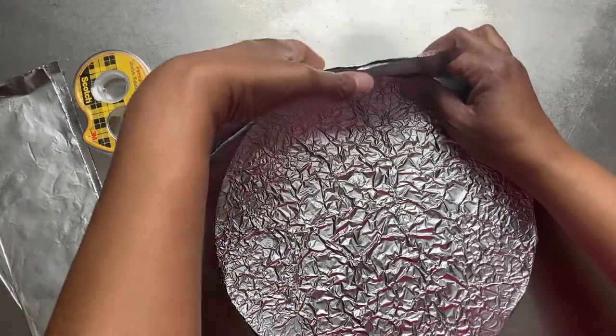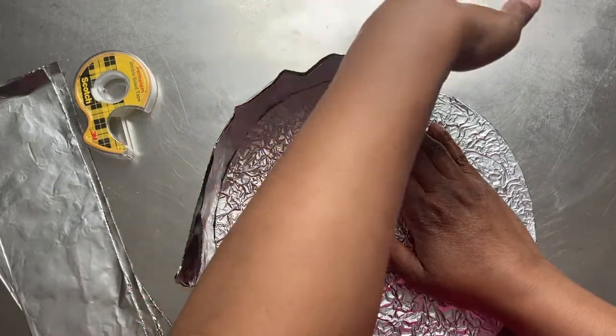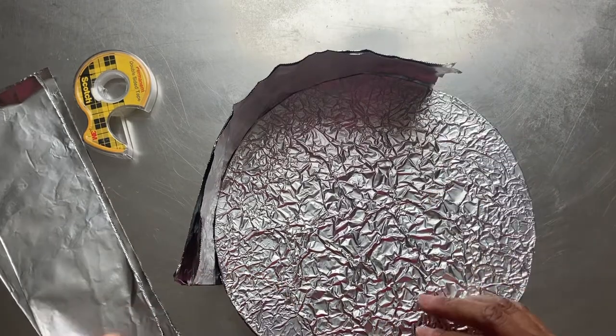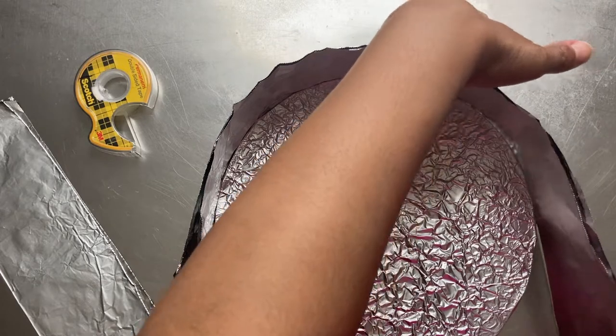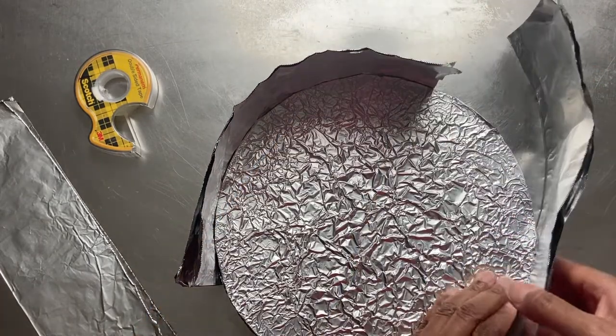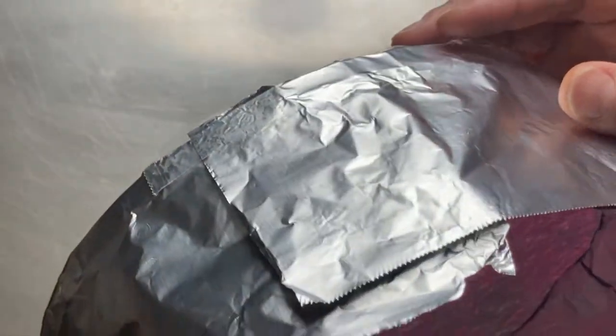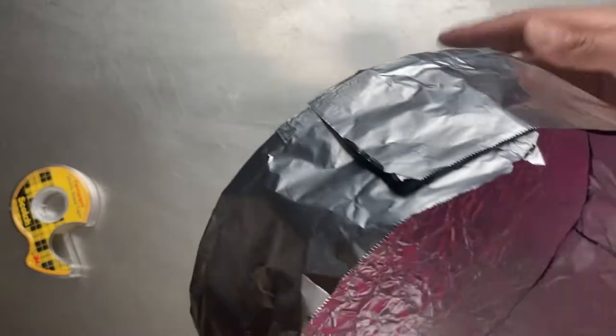Next, I align the straight sides of the strips to the bottom of the cake base and press in to secure the strips, overlapping them slightly. As an extra measure, I add double-sided tape to the outside seams where the strips overlap.